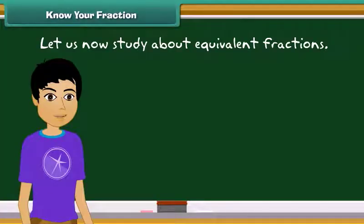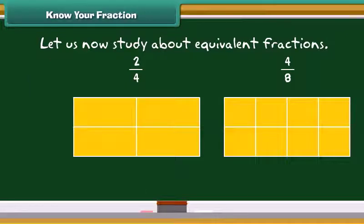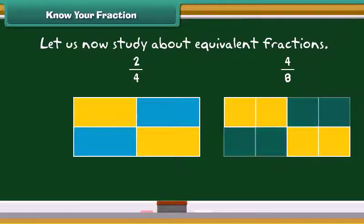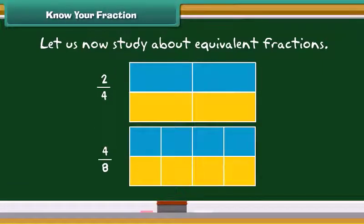Let us now study about equivalent fractions. Look at the rectangular boxes given below. In the first figure, two by four boxes are blue, while in the second figure, four by eight boxes are blue. Observe carefully — the blue colored parts of both the boxes are the same. This means two by four must be the same as four by eight. So, two by four and four by eight are equivalent fractions.